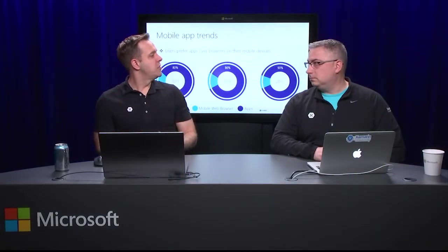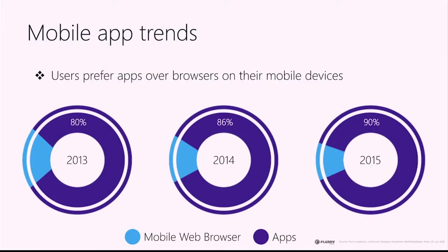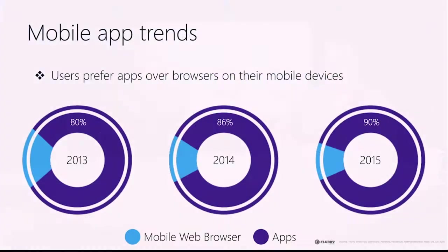How are people consuming that data? As a user of mobile devices, I prefer apps — and I think most people probably do. We see those trends: people are using applications on their devices, highly favored over mobile web. And that trend is increasing. From 2013 to 2015, we're seeing application usage increasing over the mobile browser — and that trend is only going up.